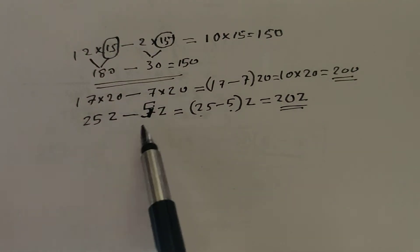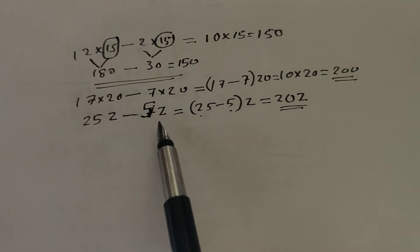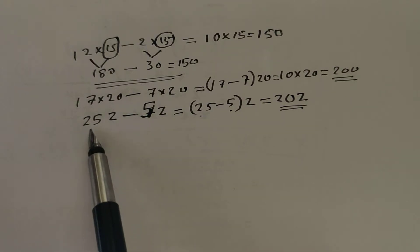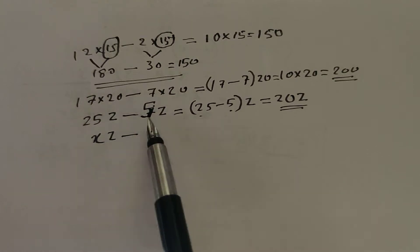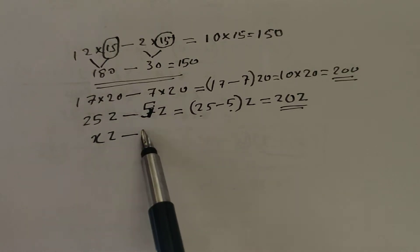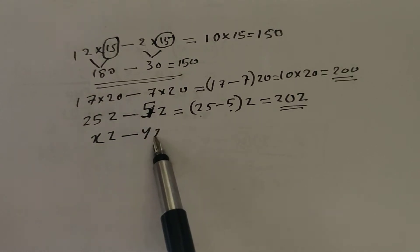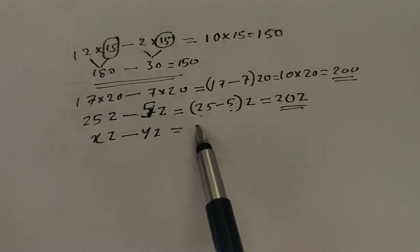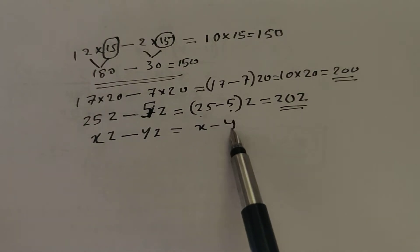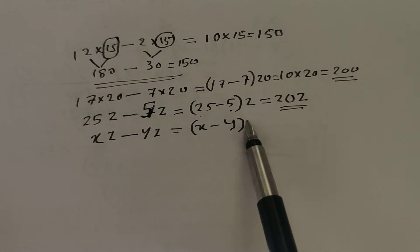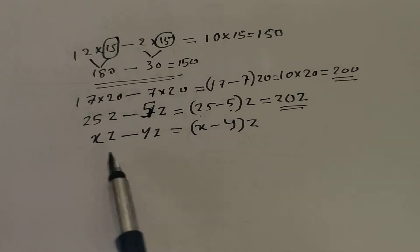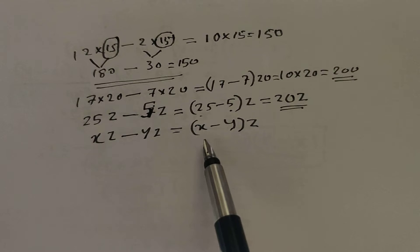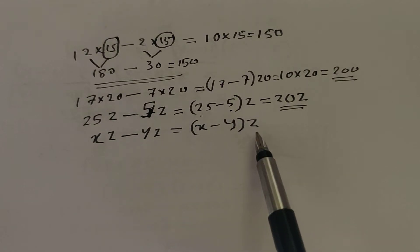Again, we can elaborate this algebra. You can use 25 as X, then XZ minus, and 5 as Y, then YZ. The calculation makes X minus Y, Z are there. So XZ minus YZ equals X minus Y, Z.